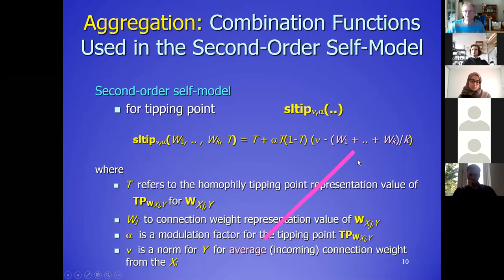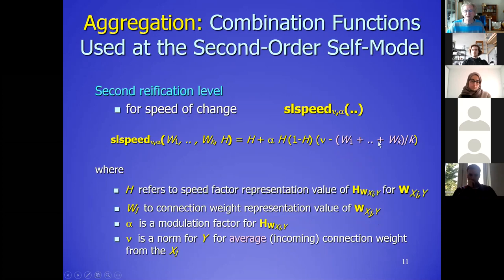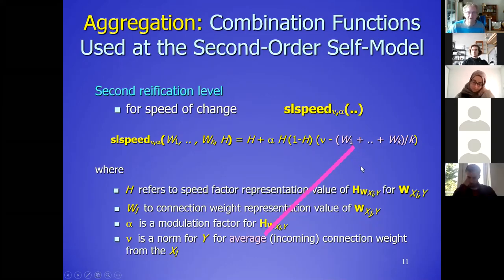The other function is actually the same type of format, but then applied to the speed factor, the eta. Again the effort could be changed to other things as well. So those are the two functions used for the states at the second-order self-model level.